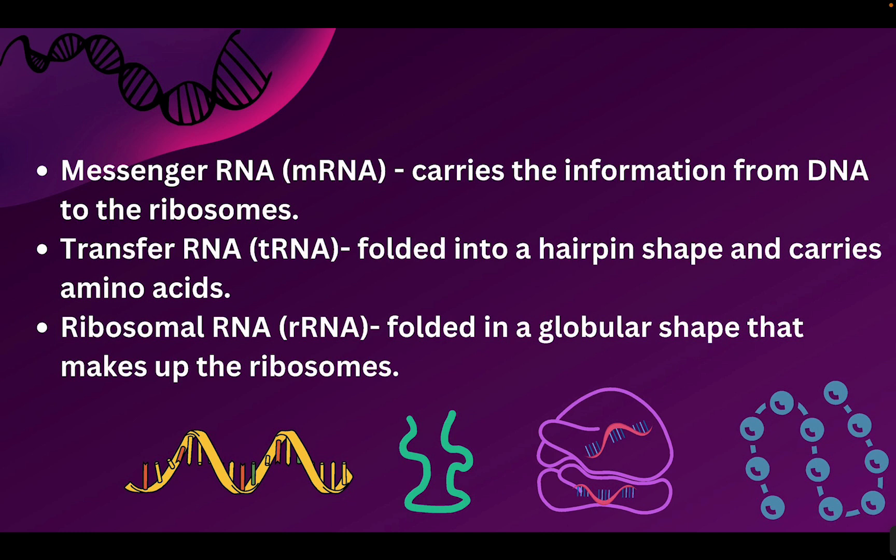The final RNA we need to recognize is called ribosomal RNA, abbreviated rRNA. It's in a globular shape — folded into sort of a blob shape — and it's what makes up the ribosomes. So if you've studied cells, you should remember that ribosomes are where proteins are made, and now we know the components that actually make up ribosomes are RNA.